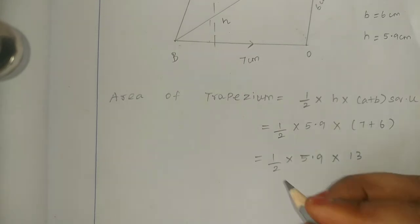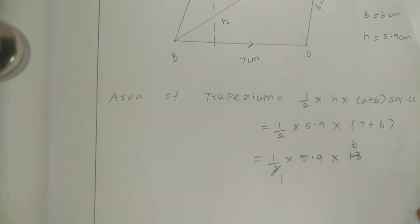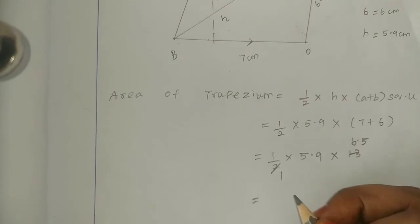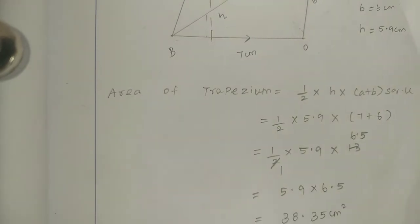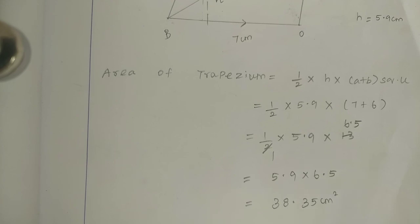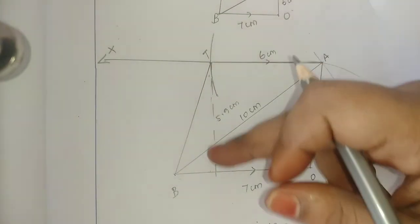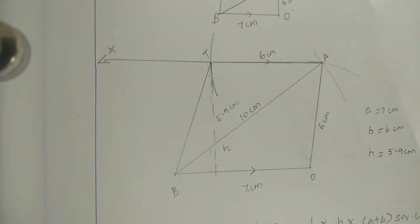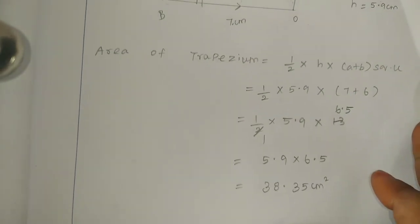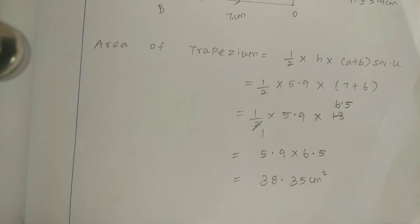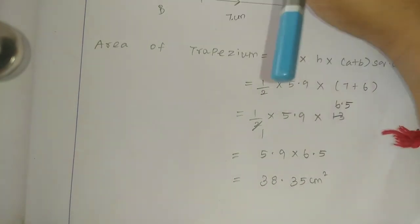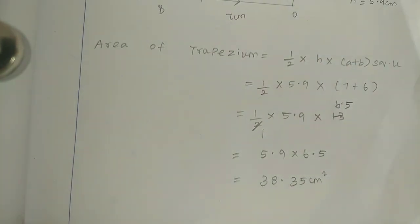So, half into 13 gives 6.5. Then 5.9 into 6.5 gives the result 38.35. The answer is 38.35 cm square. Clear? If you want to find the height easily, you can use a set-square. Thank you.